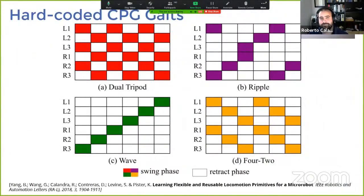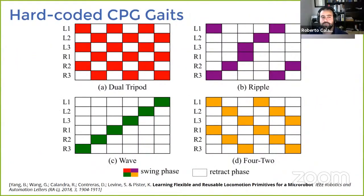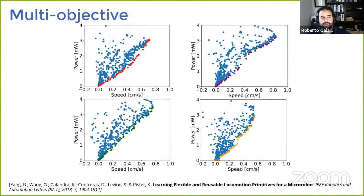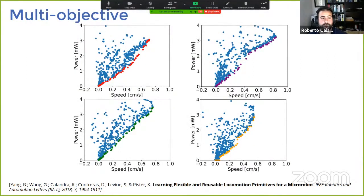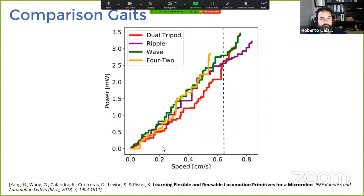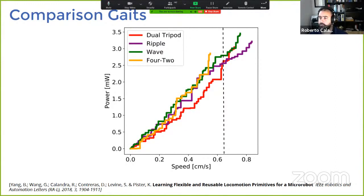Going back to the micro robot, with multi-objective optimization you can see different trade-offs between speed and power for different CPG generator classes. As a human designer, overlapping them reveals a clear winner: the dual tripod, which uses less power than other solutions if you want to go as fast as possible — until about 0.7 centimeters per second, where the ripple gait becomes more energy efficient. It's powerful to be able to see this and make a conscious decision about the trade-off.